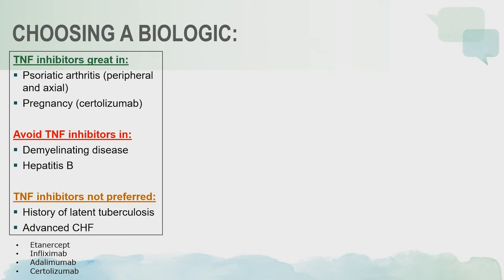However, TNF inhibitors really shine in terms of psoriatic arthritis. They do really well for people with PsA, both in peripheral joints as well as axial joints. If you have a patient who is thinking about family planning — pregnancy or breastfeeding — then certolizumab would be the drug of choice, as data have shown it is safe during pregnancy, not pulled across the placenta to affect the fetus, and also not present in breast milk.